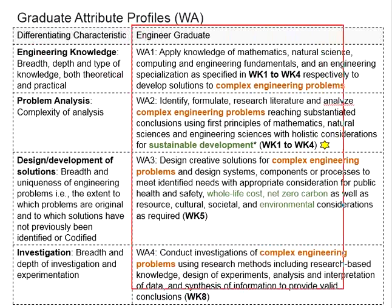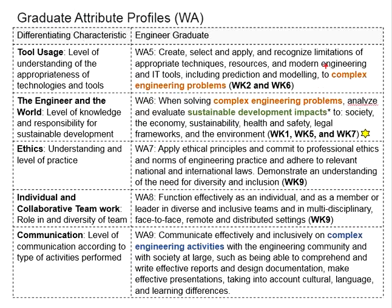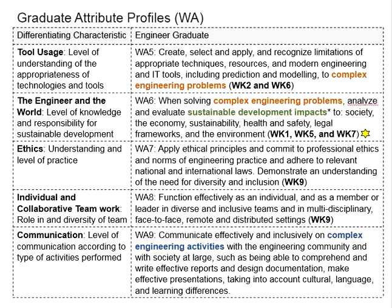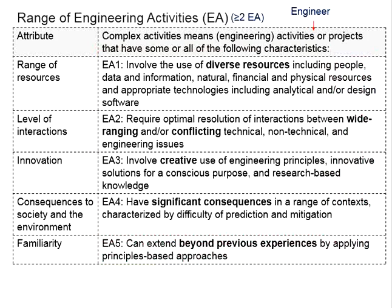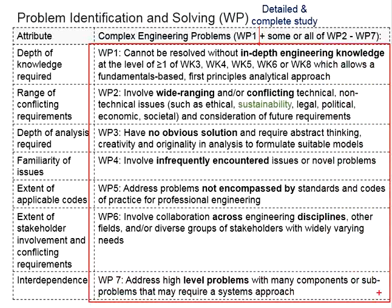If you look at the graduate attributes, there is no single graduate attribute having complex engineering problems and complex engineering activities at the same time. That means they are mutually exclusive. This is logical because they are looking into two different things. Complex engineering activities is just an activity, engineering related, having some levels of complexity.